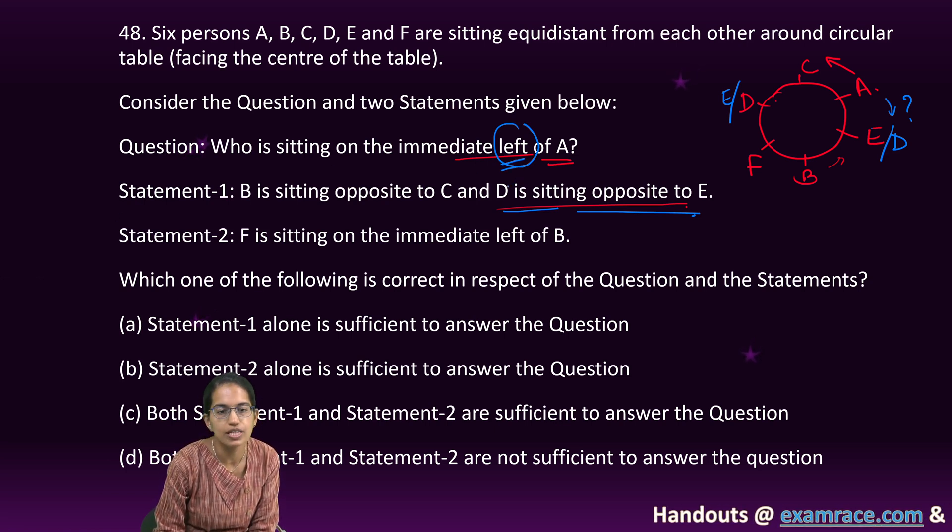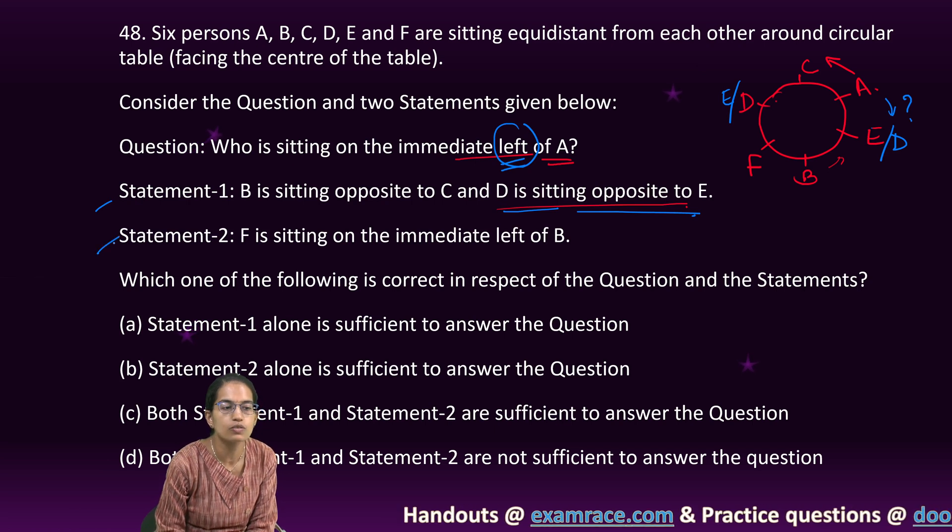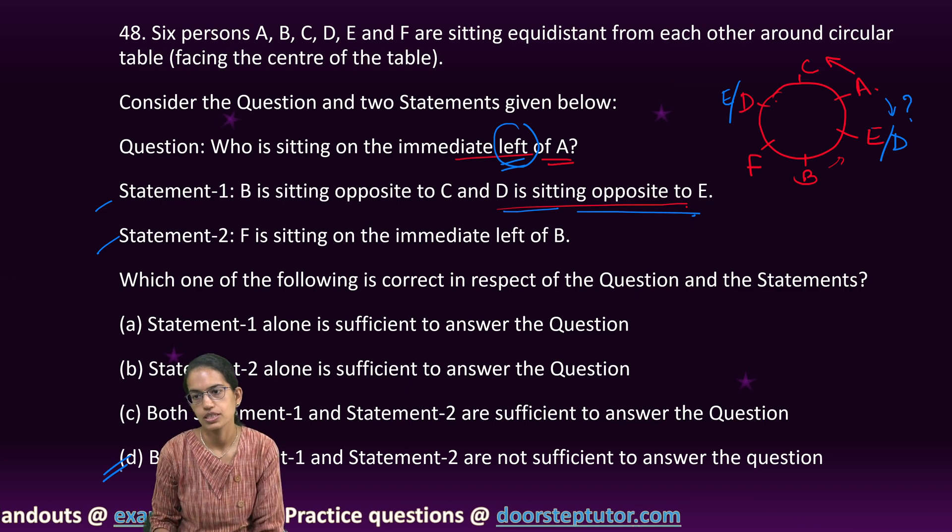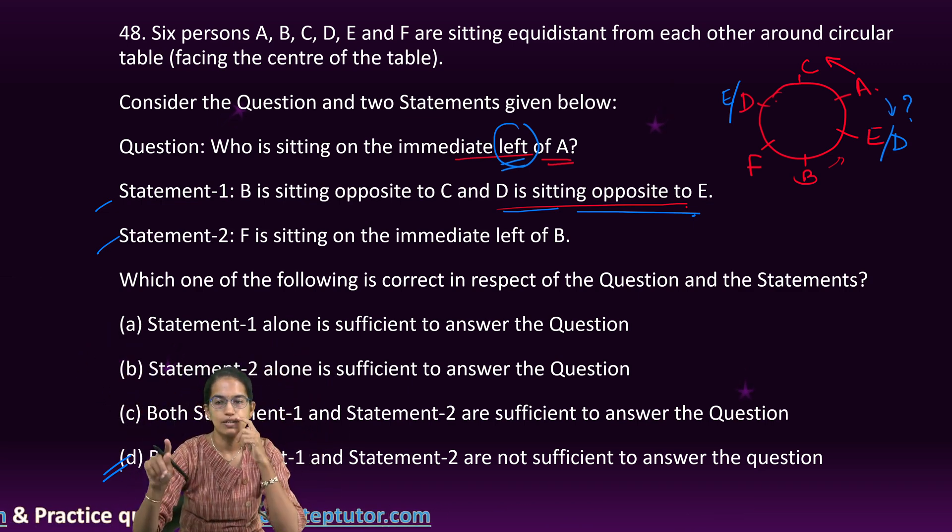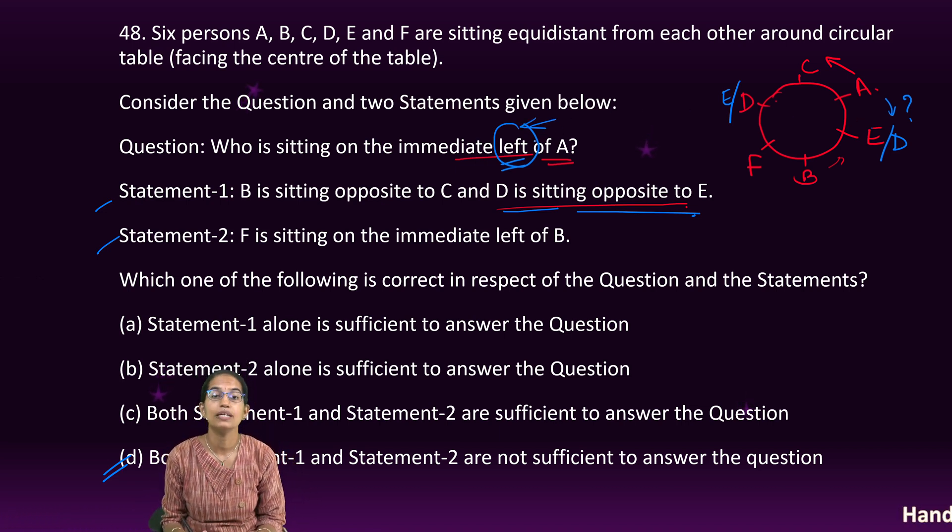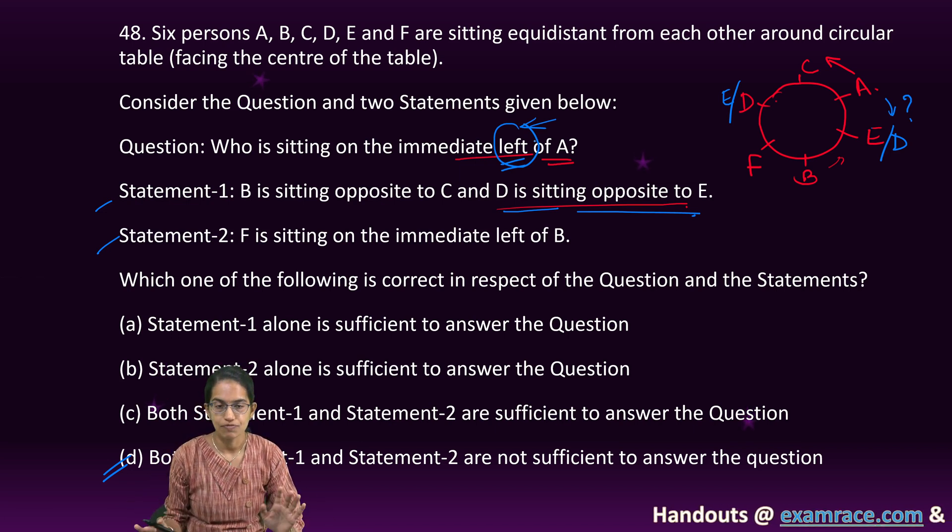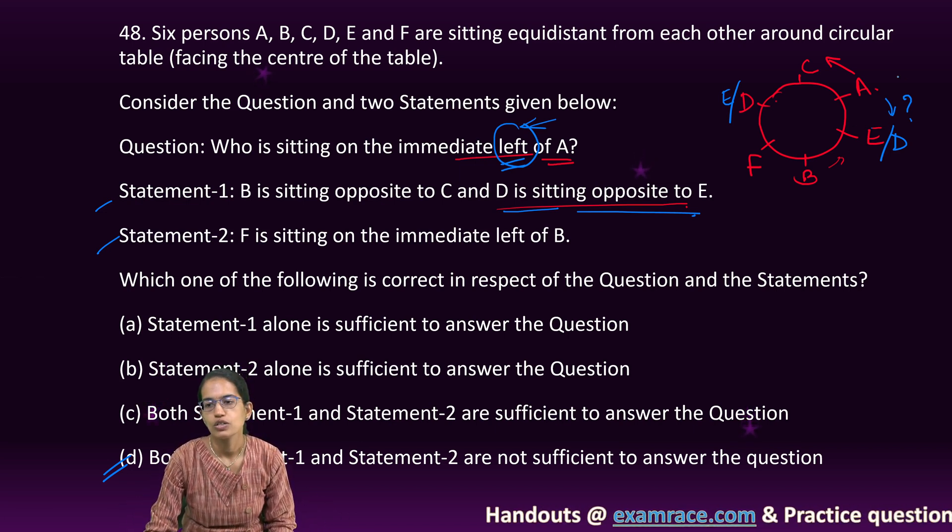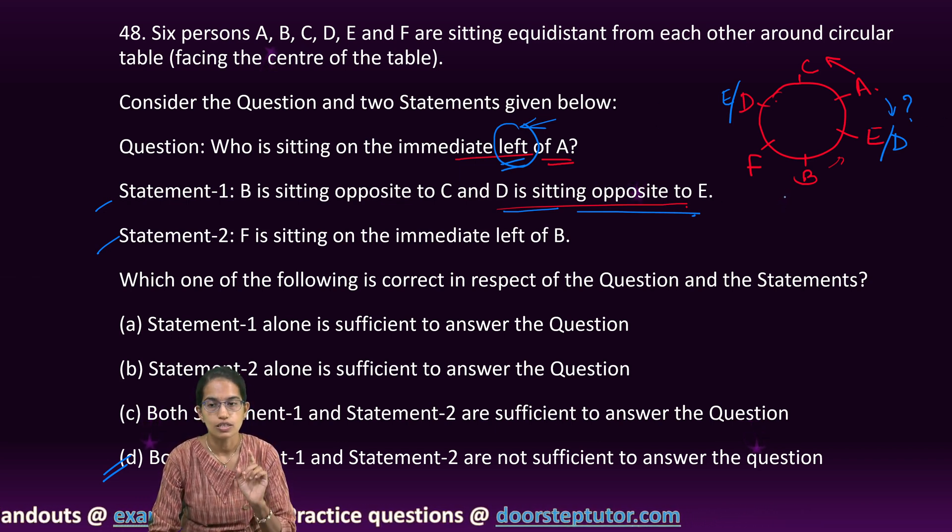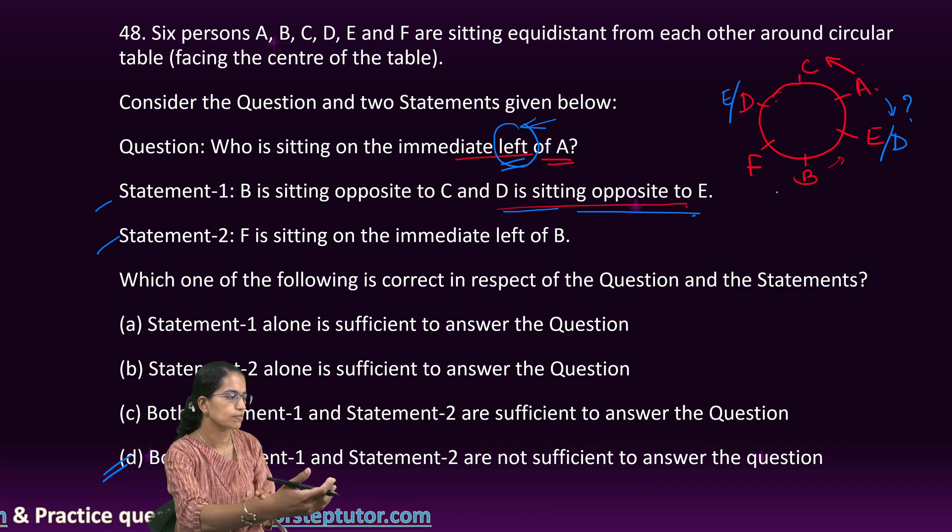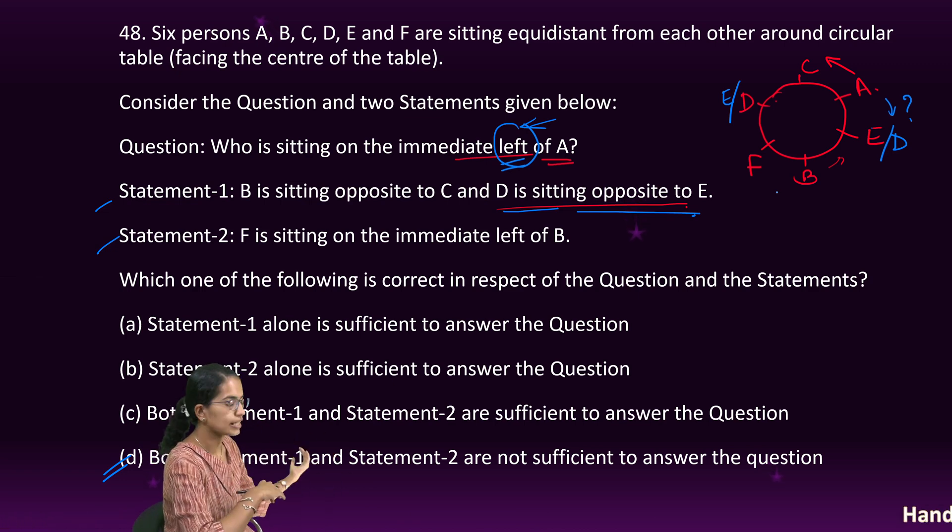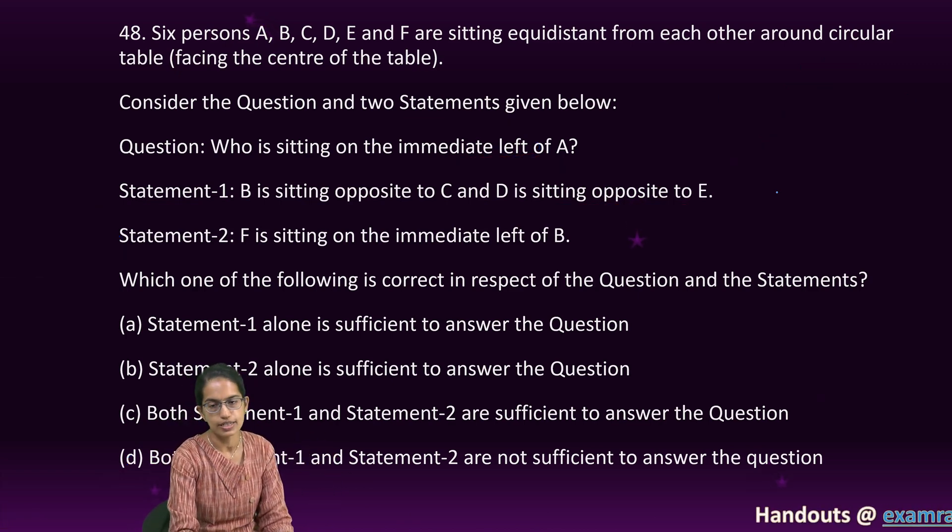Read the question very carefully. Don't do silly mistakes. Both statements would not be sufficient to answer this question. Two important things to consider: read the question carefully - immediate left of A. Then, what is left and right? Consider yourself at that position on the circular table. Consider your right and your left, and based on that try to answer.